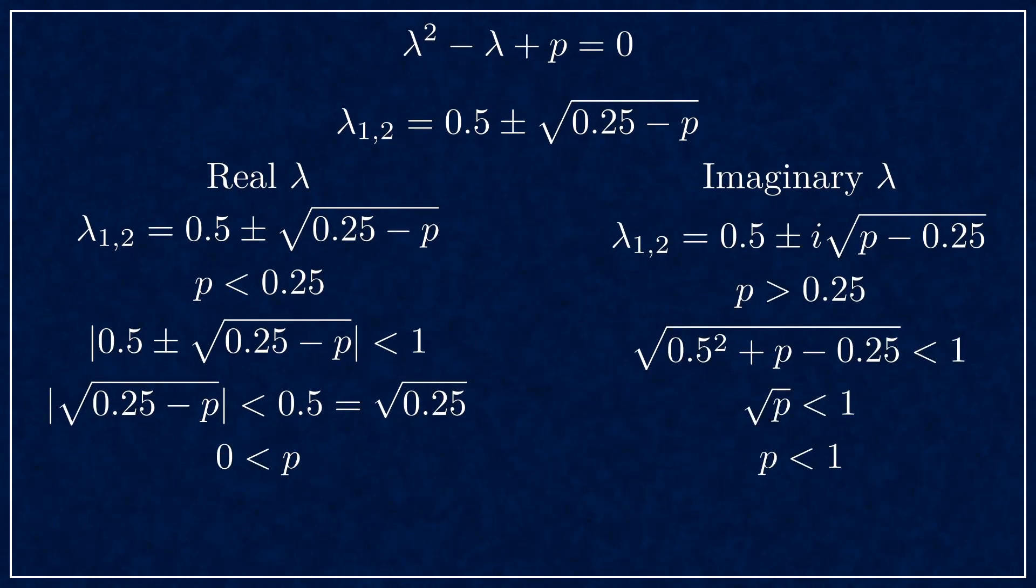The dividing condition is that p equals 0.25. Under that it's real, over that it's complex. On the real side, it leads to p being larger than 0. On the imaginary side, it leads to square root of p being less than 1, which means p is less than 1.